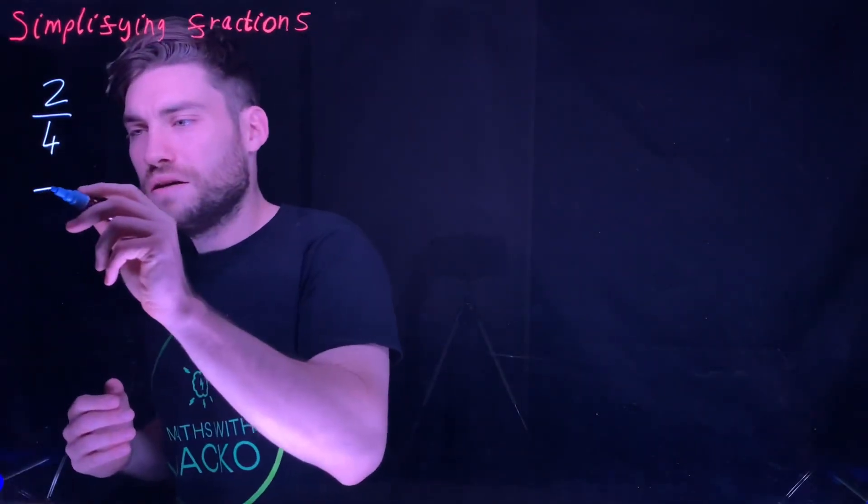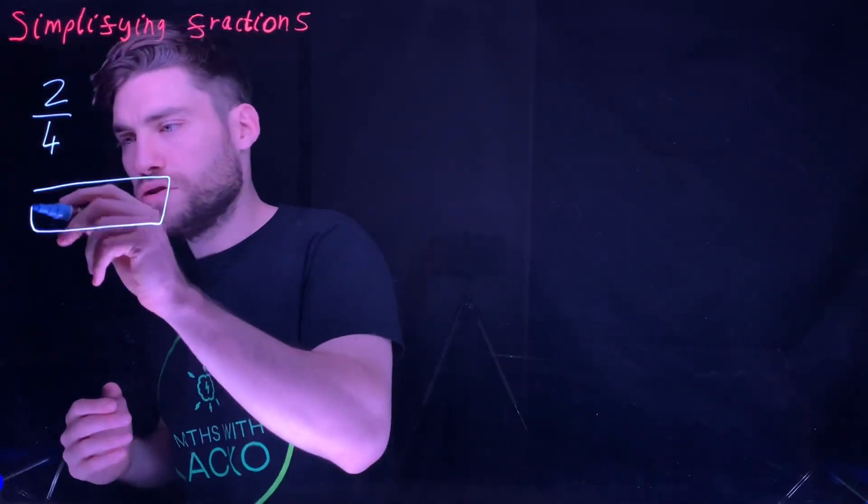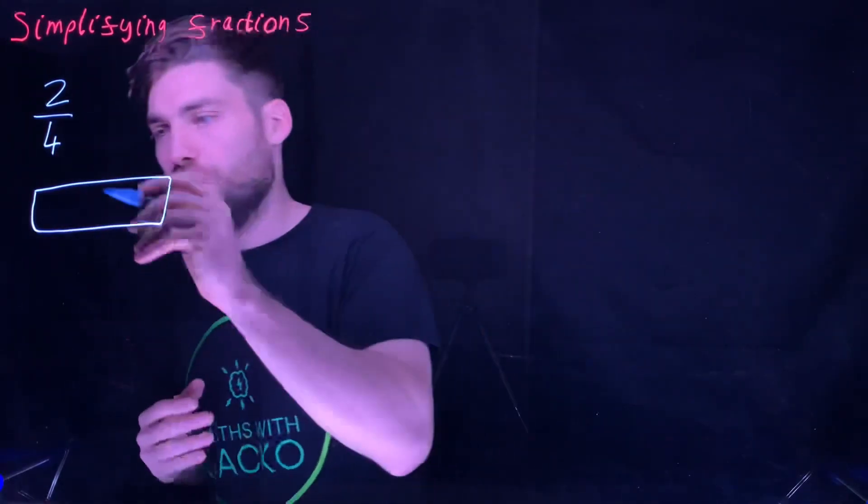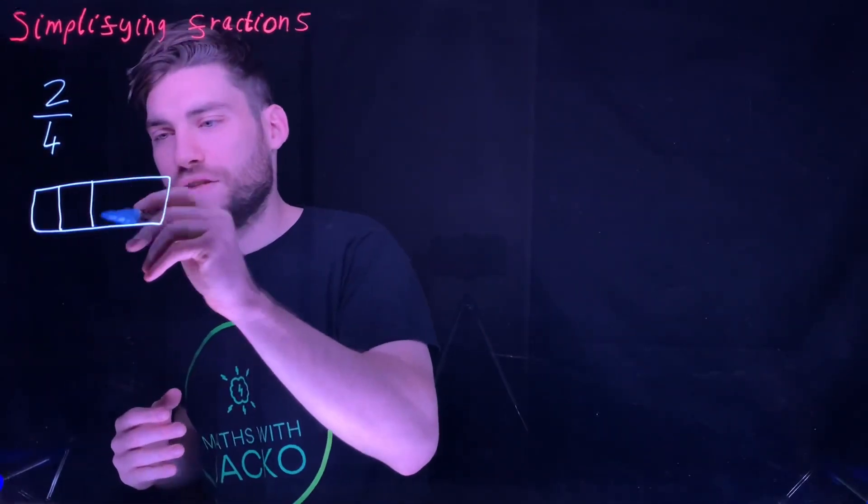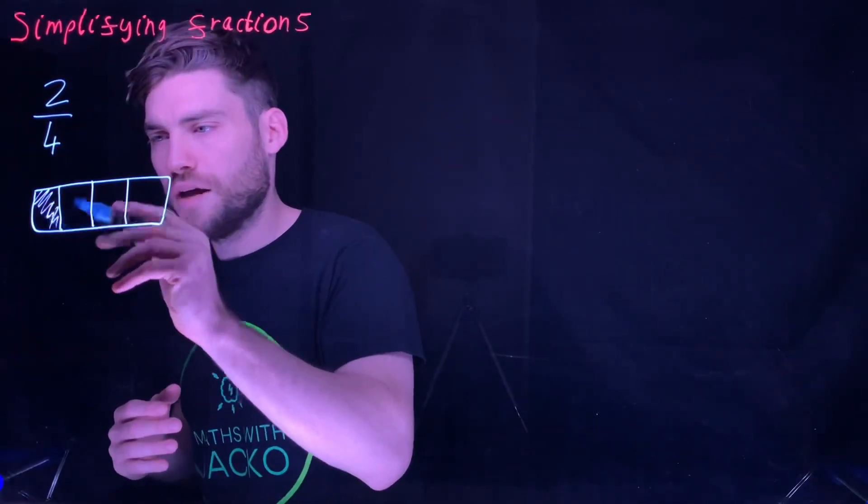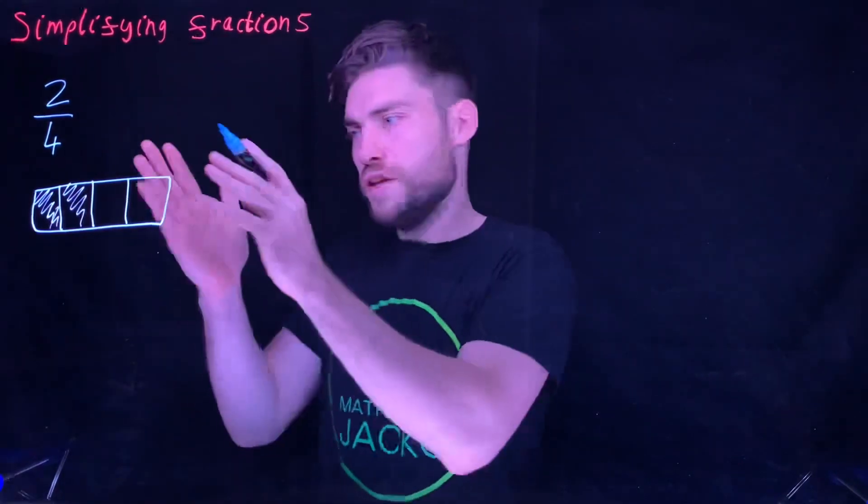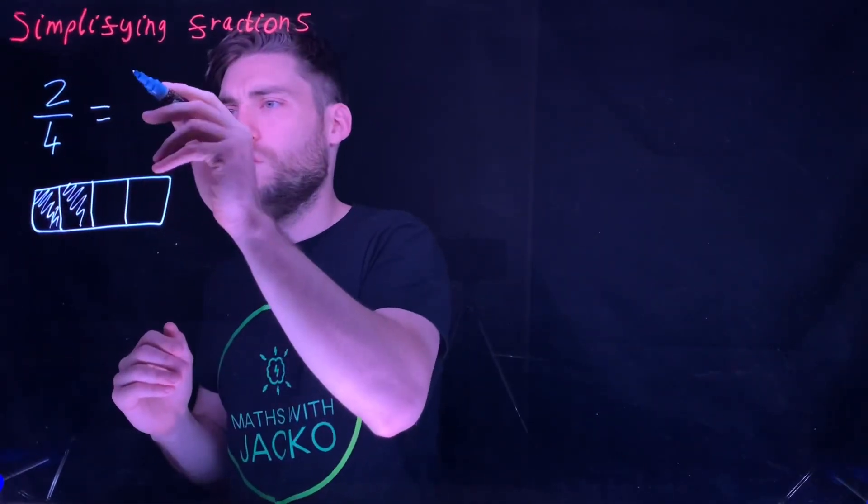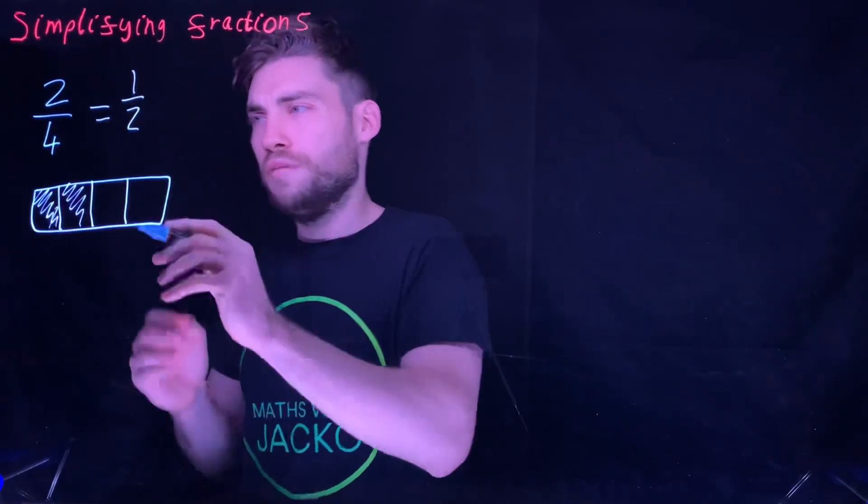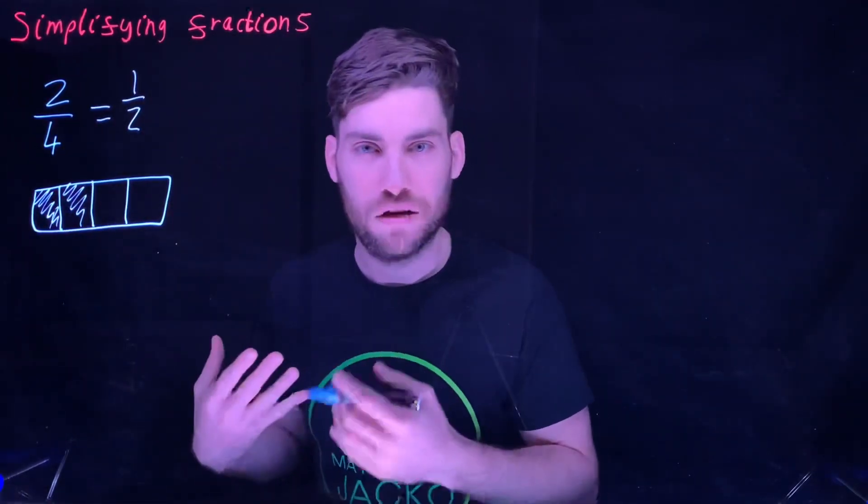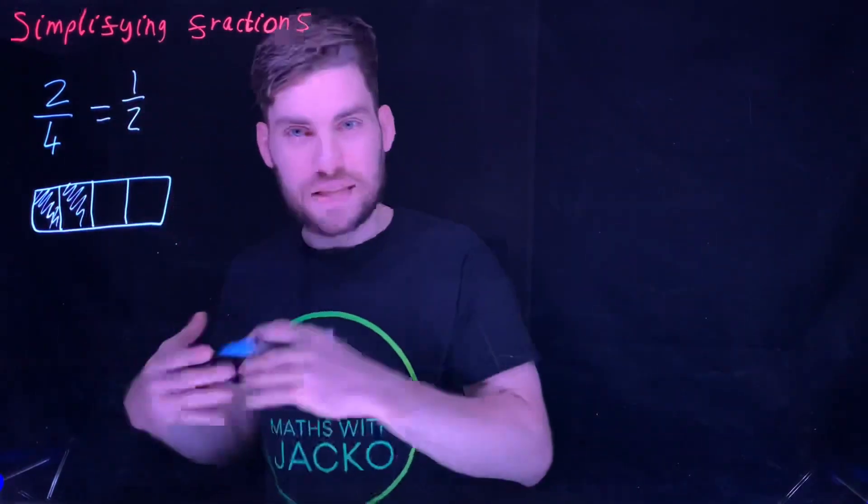We want to simplify that down. If we do that as a bar model, I've shown this in other videos as well. Because it's quarters, the denominator is four, so that means we split the bar into four. And we have two of those.